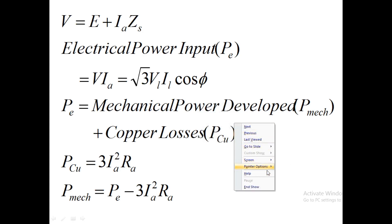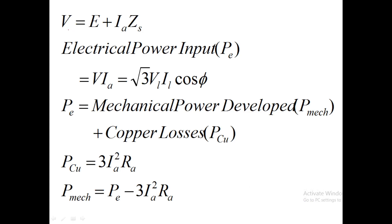V equal to E plus Ia into Zs, and power input is V into Ia, that means root 3 VL IL cos phi, and P is the mechanical power developed. Electrical input is mechanical power developed plus copper losses. Input power is mechanical power — output power plus losses.